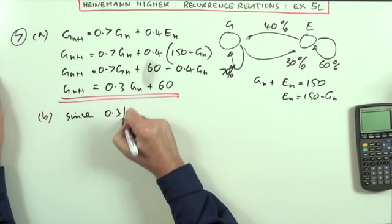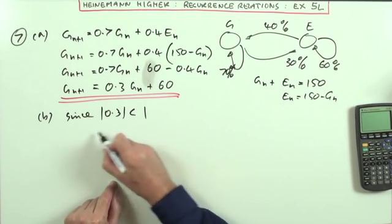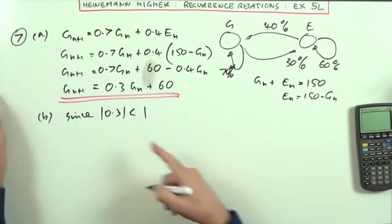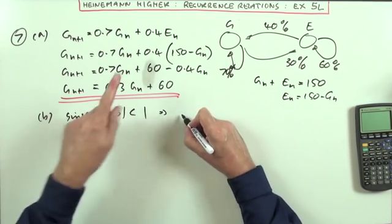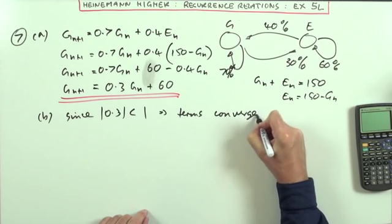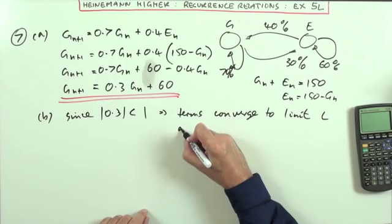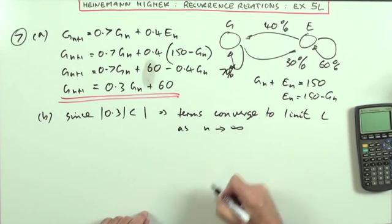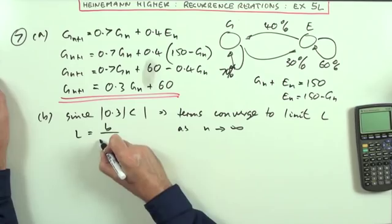So straight away I can say since 0.3, I'm using the absolute value sign, if you don't want to use that, just use less than 1, greater than negative 1. Since that coefficient is a proper fraction, that means that the terms are going to converge to a limit, which I'll just call L, as n tends to infinity. And I can get this limit.